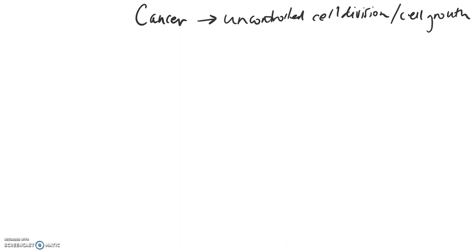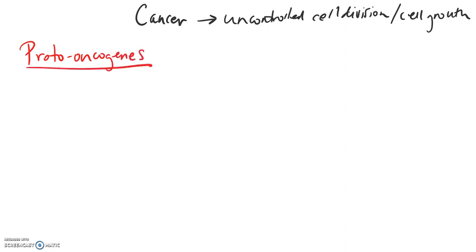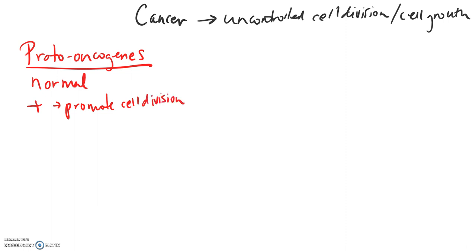Let's talk about how the body or tissues normally control cell division. We can look at it from positive and negative control. Over here we have proto-oncogenes — these are normal forms of genes. These promote cell division when it's necessary, so in the normal cell cycle when repair is needed or when growth is needed, these genes are going to promote a cell through cell division.